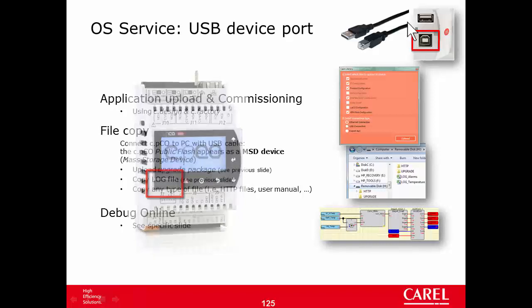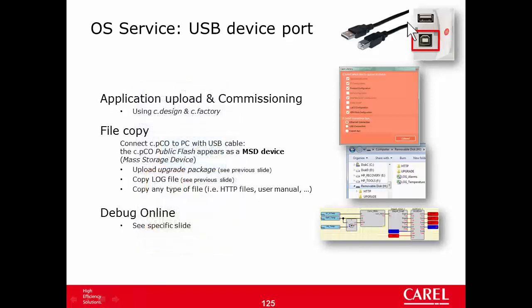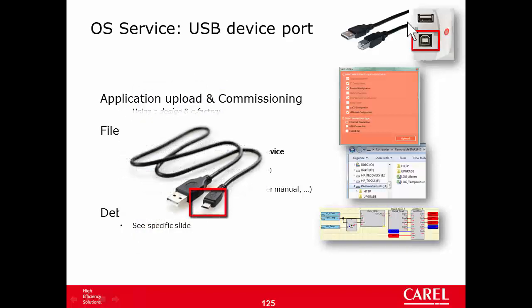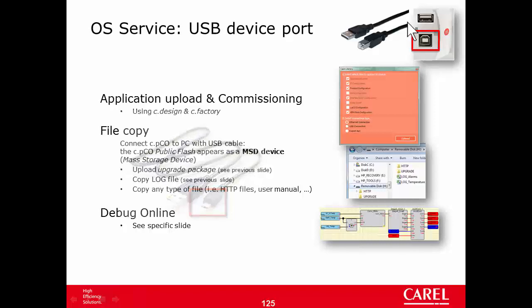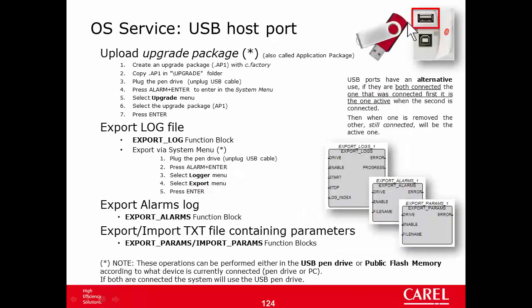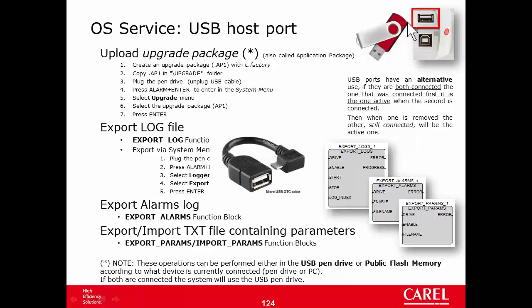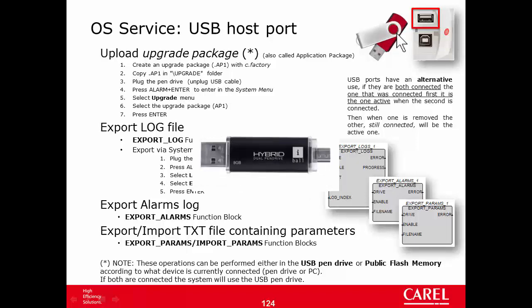To use CPico Mini as a device, connect it using a USB cable with a micro USB connector like a smartphone cable. To use it as a USB host port to connect a pendrive, you need a USB OTG cable (USB On-The-Go), or a pendrive that has both a standard USB and a micro USB connector.